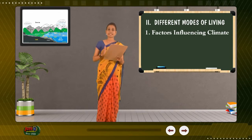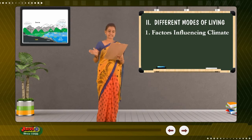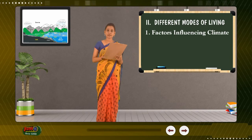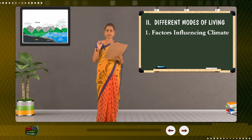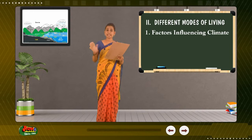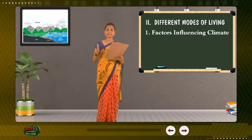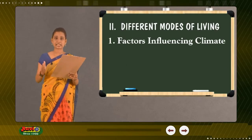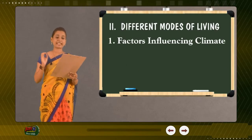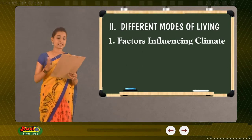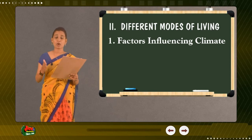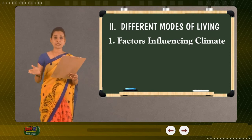The Earth is surrounded by a layer of gases called the atmosphere. The atmosphere is very important to life on Earth and does many things to help protect life and help life to survive. Weather is considered to be the atmospheric conditions that are happening now or within a few days.